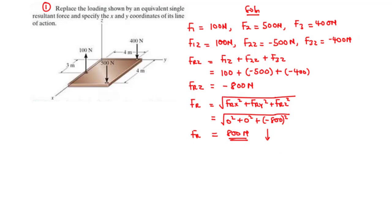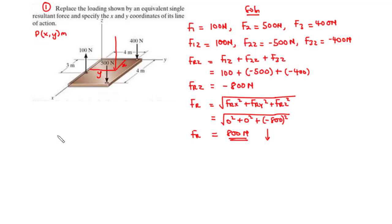The negative sign confirms the resultant acts vertically downwards. Next, we need to find the location where this resultant force line of action passes. We specify an arbitrary point P(x, y) in meters, then take the moment of the resultant force about both the x-axis and the y-axis, equating it to the sum of moments of the individual forces.